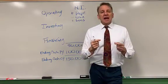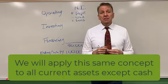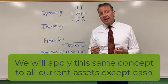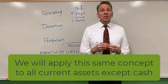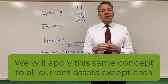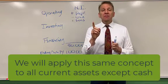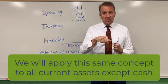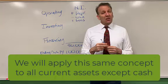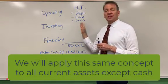All current assets except for cash — inventory, prepays, supplies, and all other current assets — work in the same way. We look at the difference between years. If the current asset balance went up, then the effect on cashflow would be decreasing. If the balance went down, the cashflow effect would be an increase.